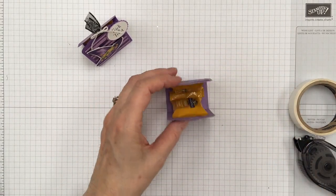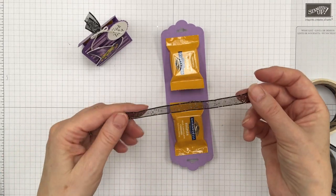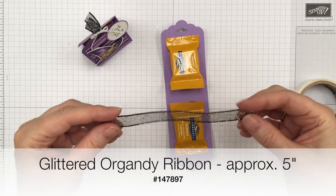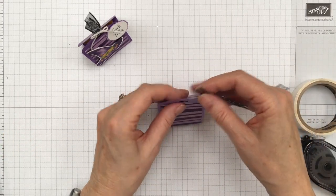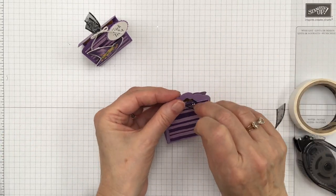Okay, so we're going to use the glittered organdy ribbon. This is gorgeous. I don't even know if you can see how pretty it is, but it's so pretty. So we're going to feed it right through here.